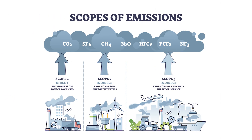Under the WRI GHG Protocol, the gold standard for carbon reporting, we have three scopes: Scope one, Scope two, and Scope three. Scope one is direct GHG emissions occurring from sources that are owned or controlled by the company. Scope two is GHG emissions from the generation of purchased electricity consumed by the company. And Scope three is a category that allows for the treatment of all other indirect emissions, split into 15 different upstream and downstream categories.